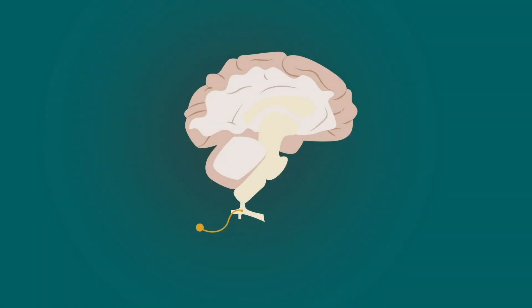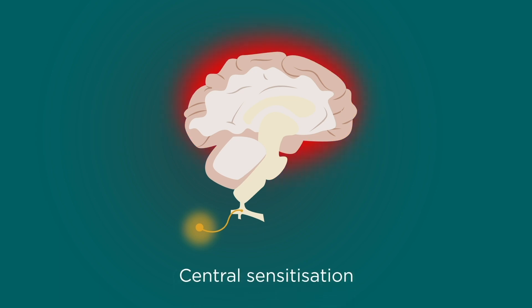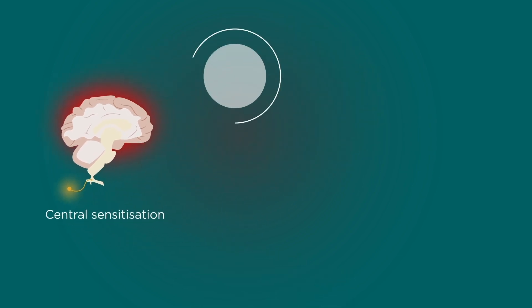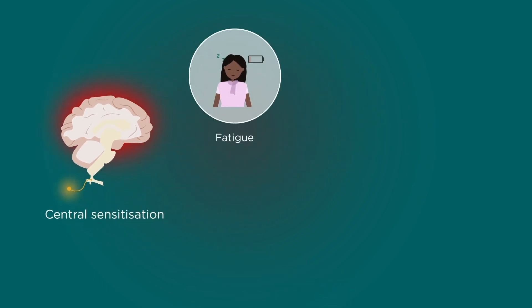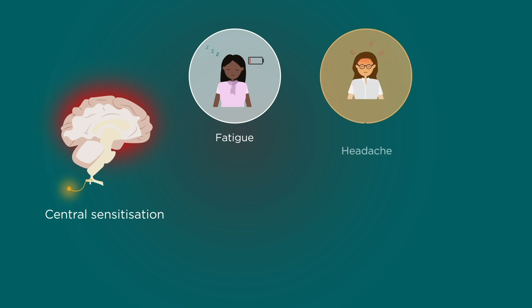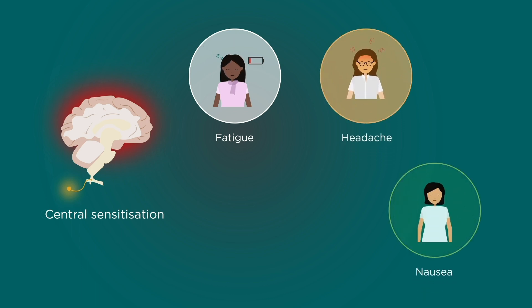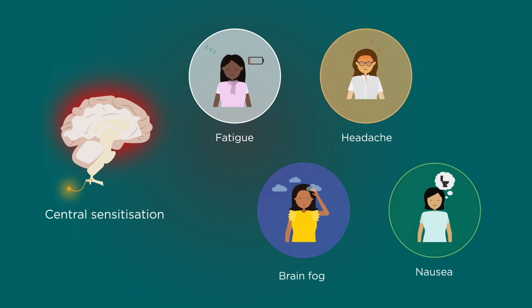Ultimately, neural pain centres in the brain are activated and central sensitisation develops. Fatigue is the hallmark, but headaches, nausea and brain fog can also be experienced.